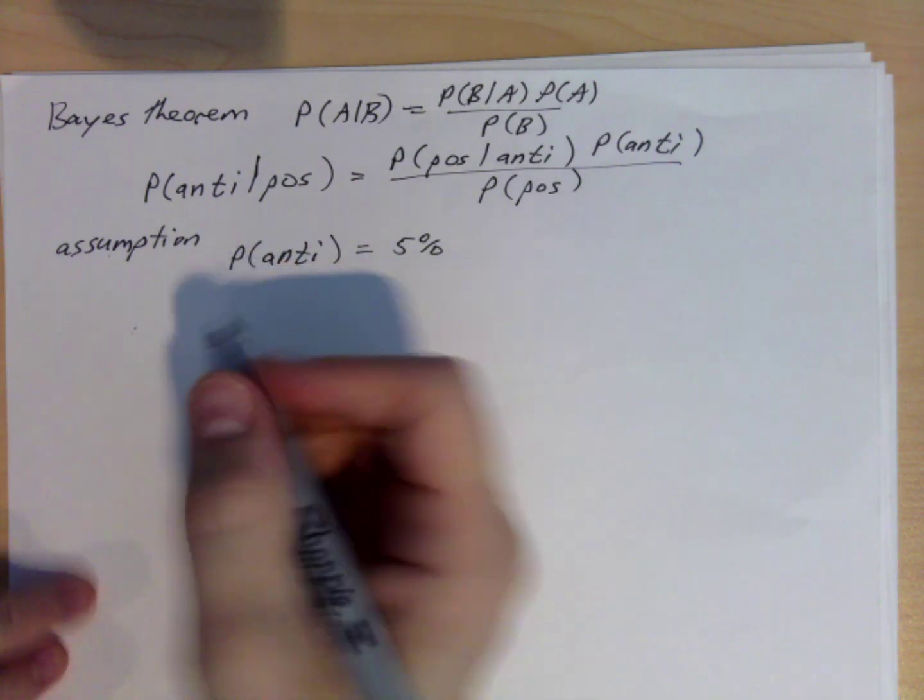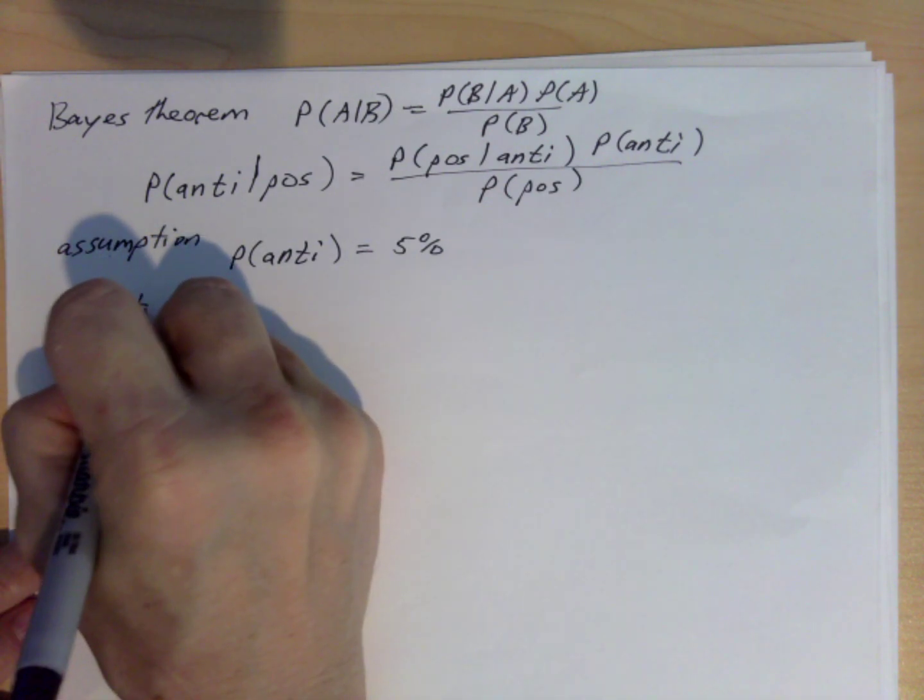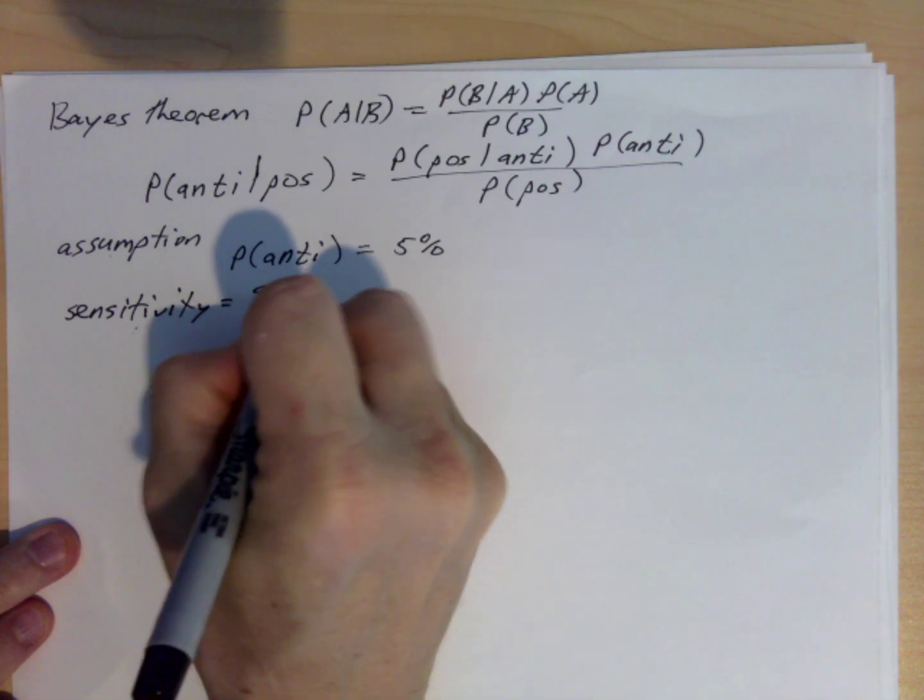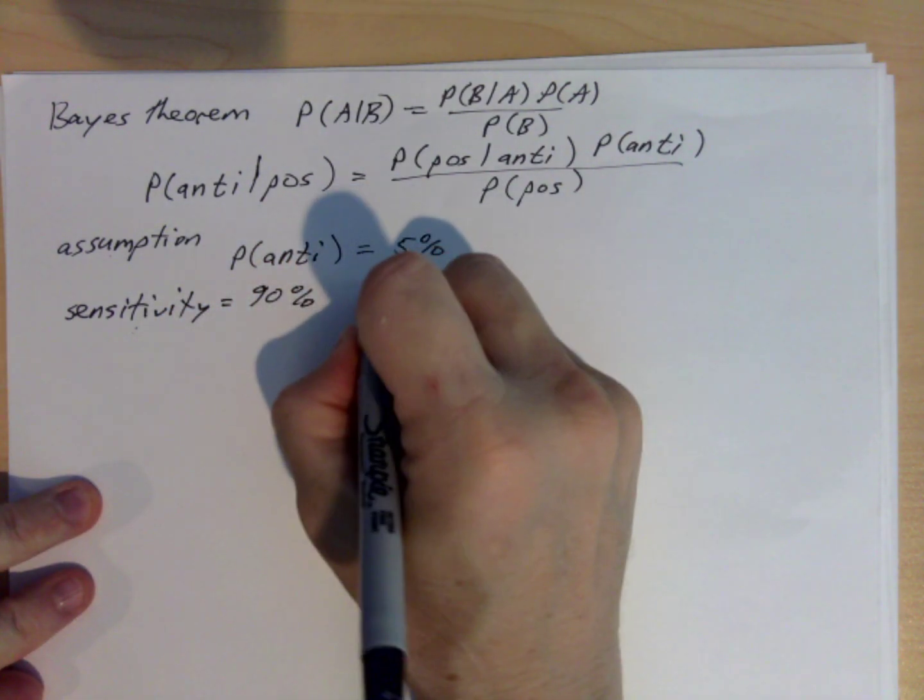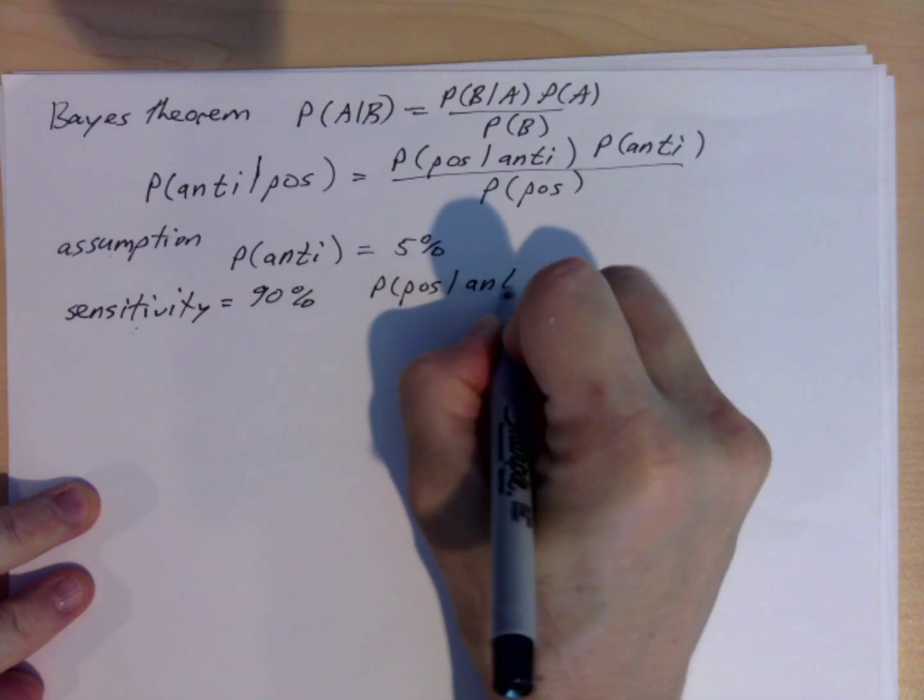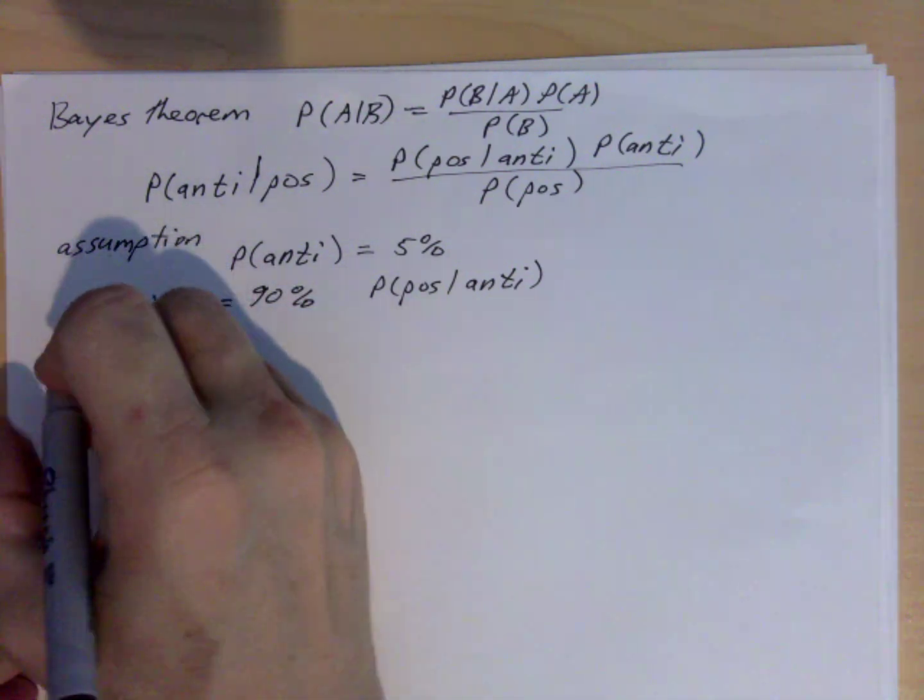So they give a couple of things about the test, a couple of numbers that we need to use. One is that the sensitivity of the test is 90%, and what that is is the probability that you actually test positive given that you have antibodies.